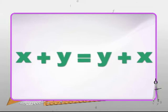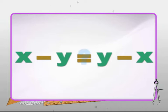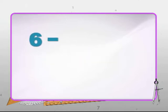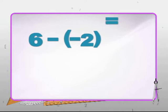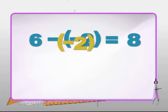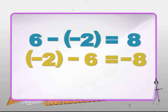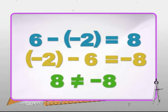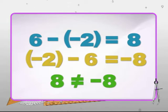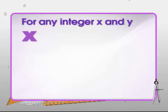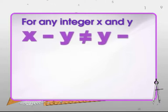Does the commutative property hold for subtraction? Let's check: 6 minus minus 2 equals 8, whereas minus 2 minus 6 equals minus 8. Changing the order changes the answer, so subtraction of integers is not commutative. In general, for any two integers x and y, x minus y is not equal to y minus x.